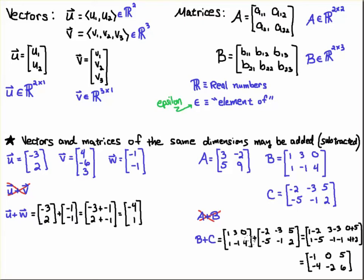And we call that component-wise or entry-wise. So I would take 1 plus -2, 3 plus -3, 0 plus 5, 1 plus -5, -1 plus -1, and 4 plus 2. And we would get just what you would expect—just by adding the entries, we get -1, 0, 5, -4, -2, 6.